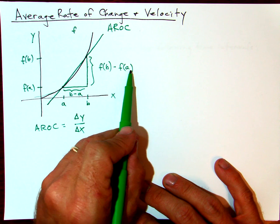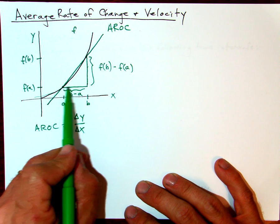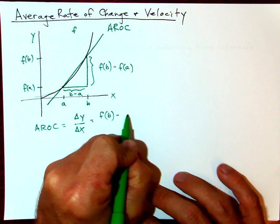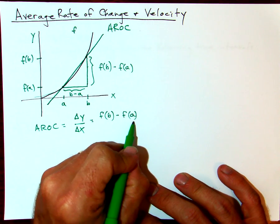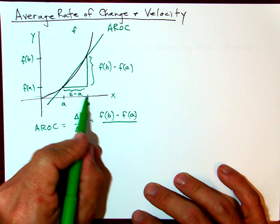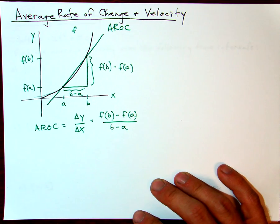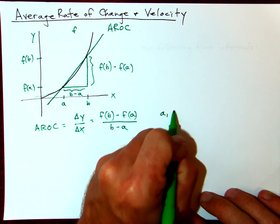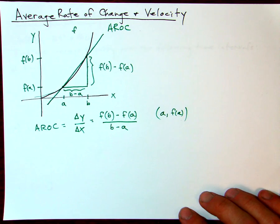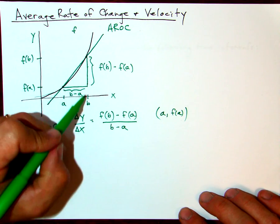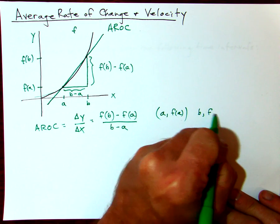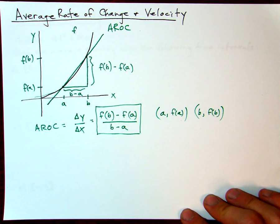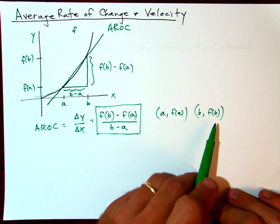This tells us how y changes: we start at f of a and move across to f of b, so that's f of b minus f of a. The change in x goes from a to b, so it's b minus a. Since the point (a, f(a)) and the point (b, f(b)) are both on the curve, hopefully you recognize this formula as just the slope of the line between these two points — and that's our average rate of change.